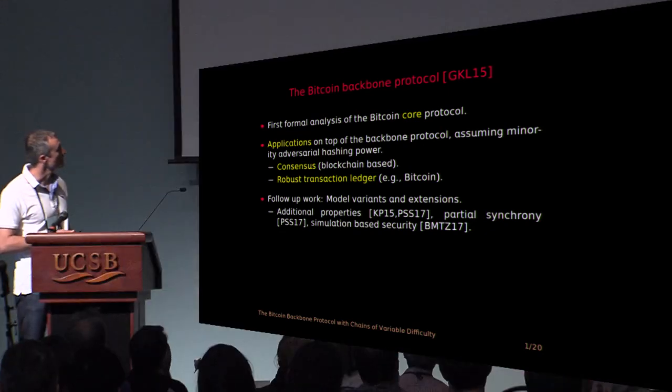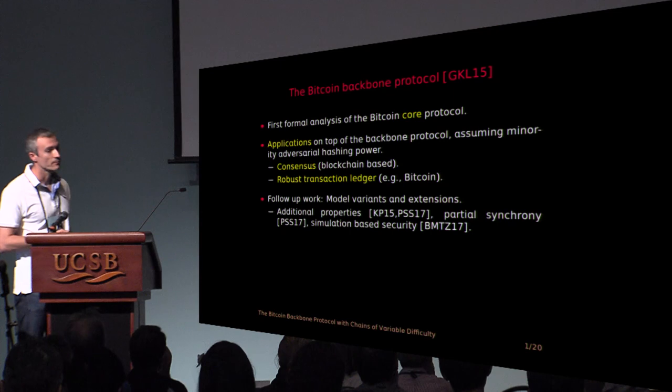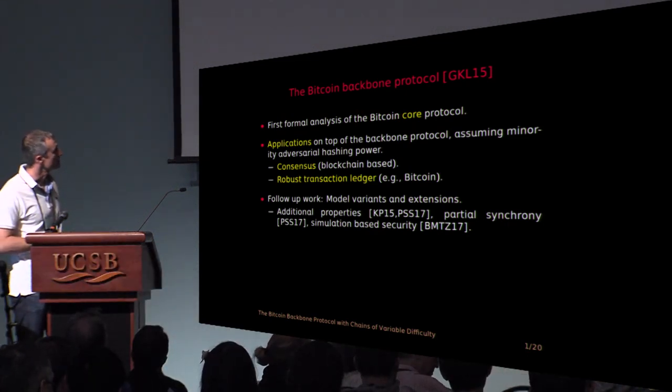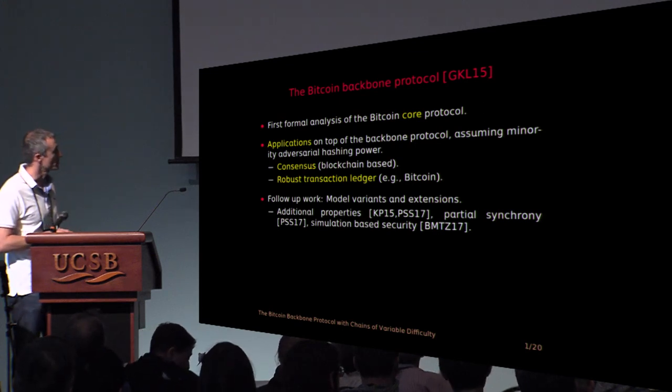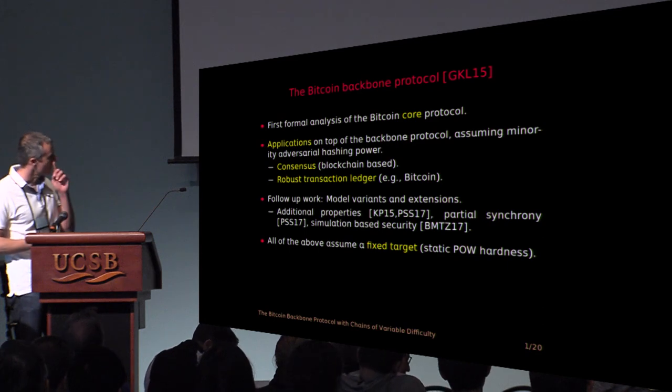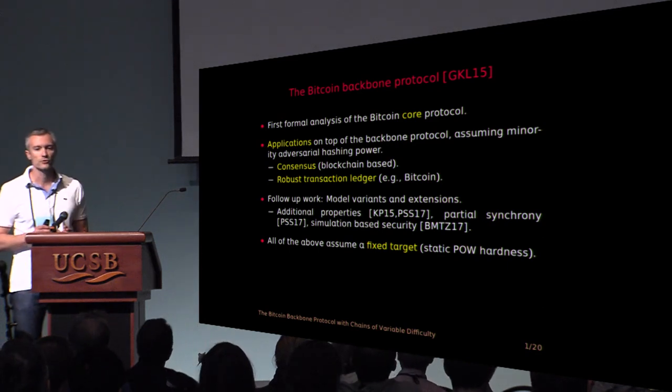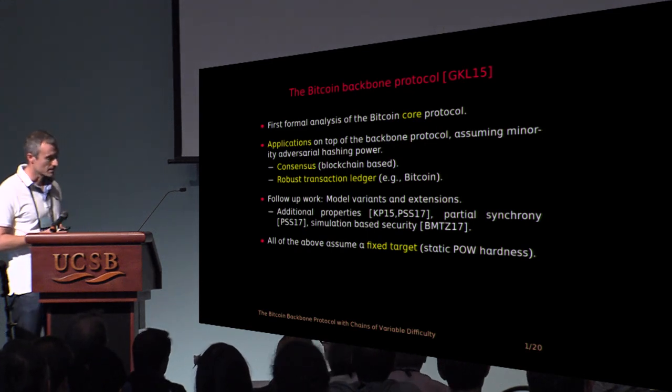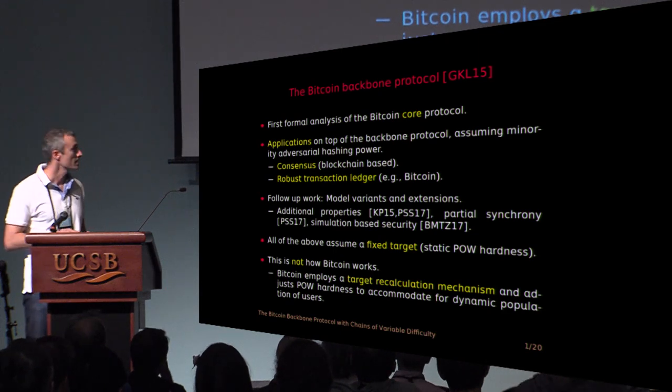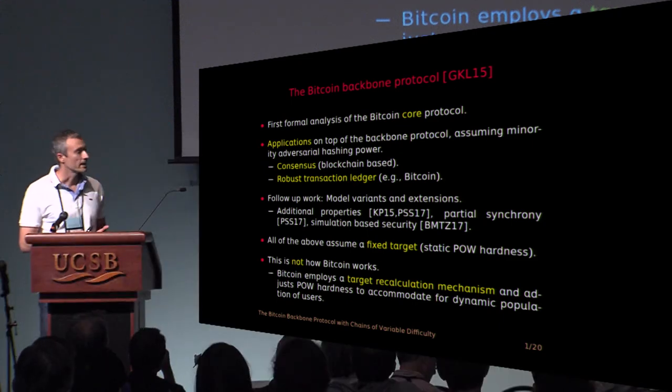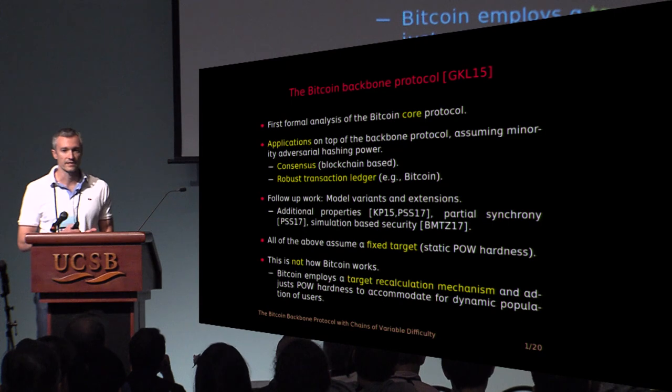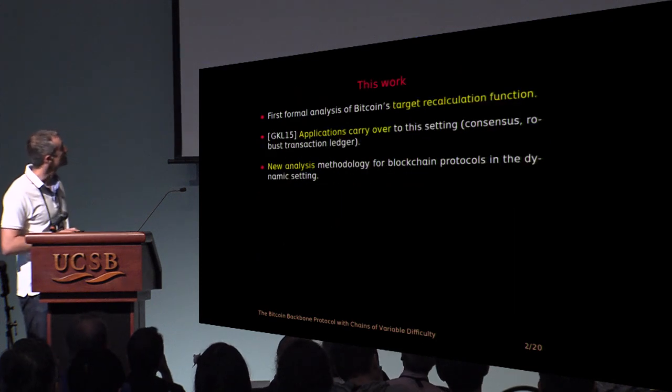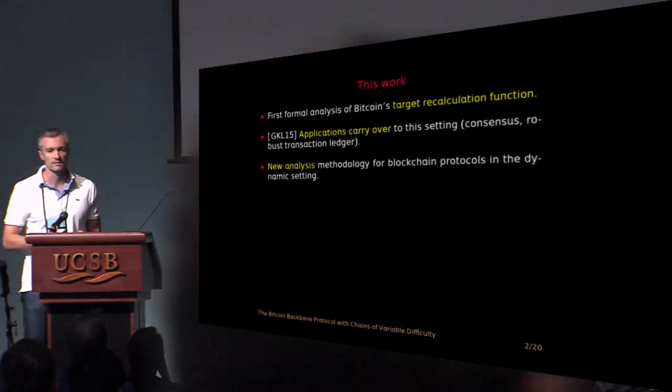There were follow-up works with model variants and extensions where additional properties of the blockchain were studied or different network models like a partial synchronous model. And in the next talk we'll see simulation-based security. Now all the above works assume a fixed target which means a fixed hardness in the proof of work puzzle, and this is not how Bitcoin works. In reality Bitcoin employs a target calculation mechanism and every now and then it adjusts the hardness of the proof of work to accommodate for changes on the number of participants. In this work we provide a formal analysis in this dynamic setting.